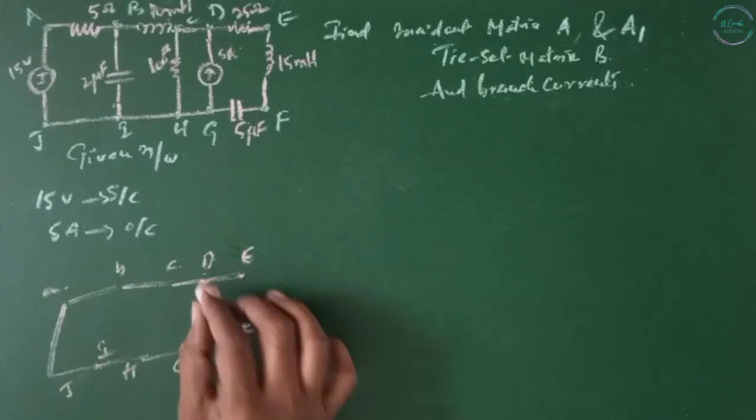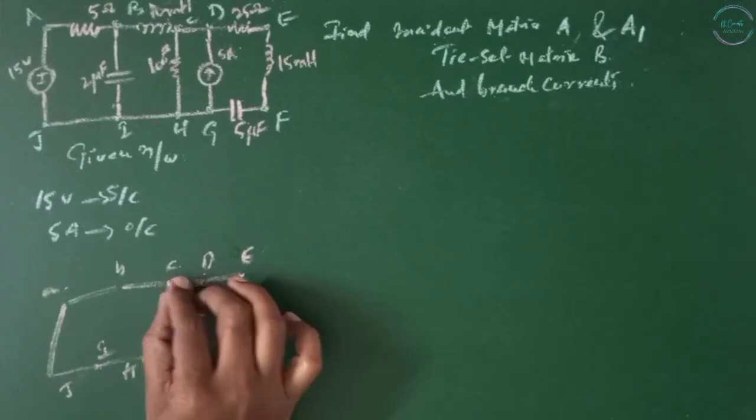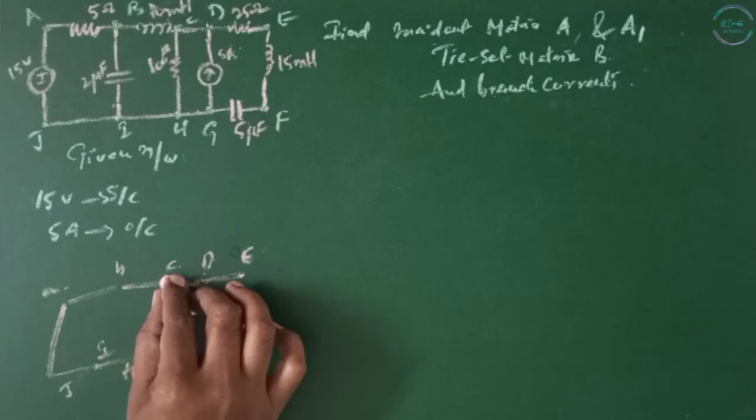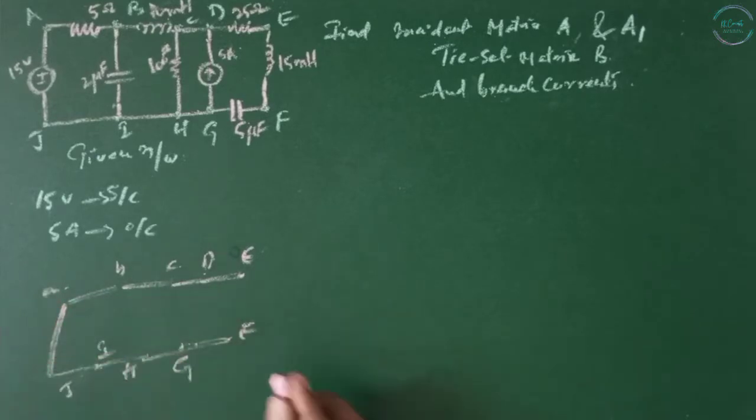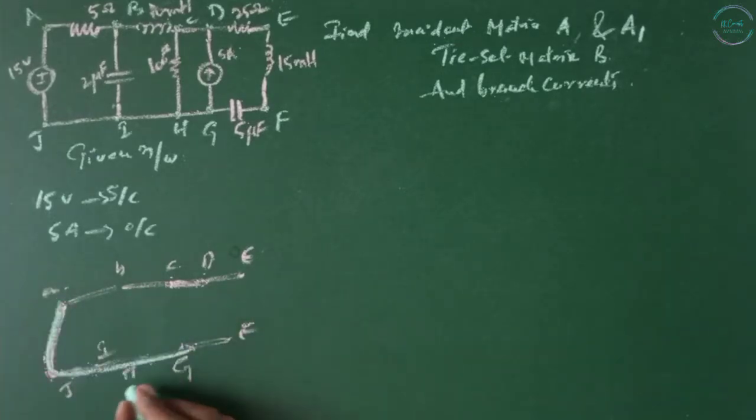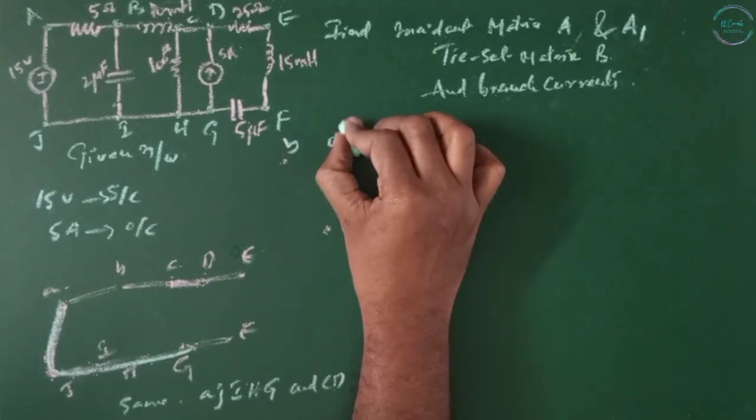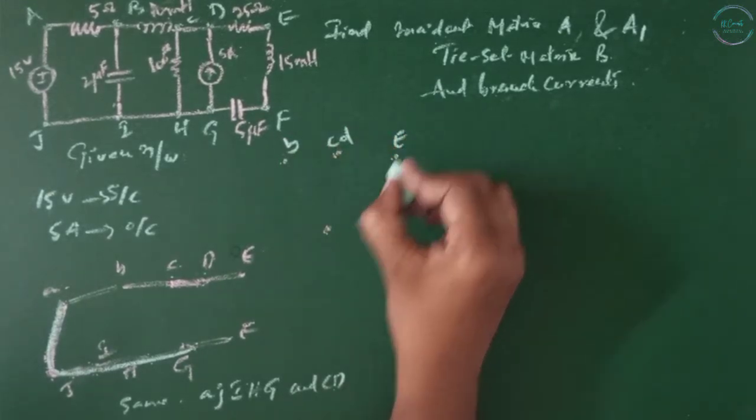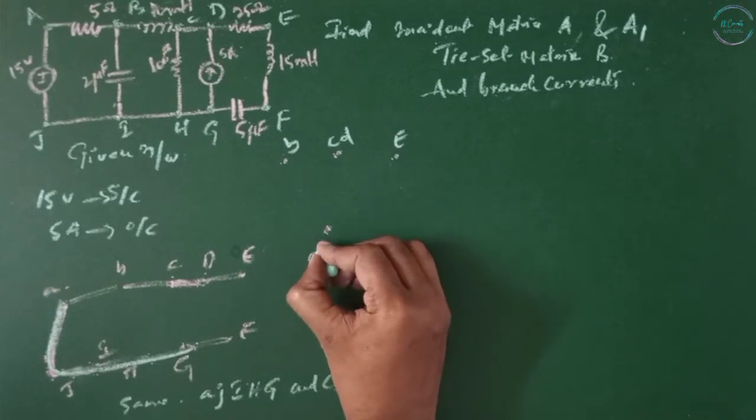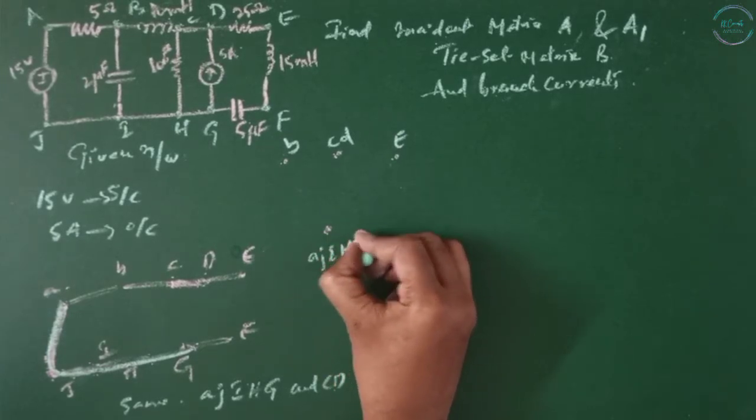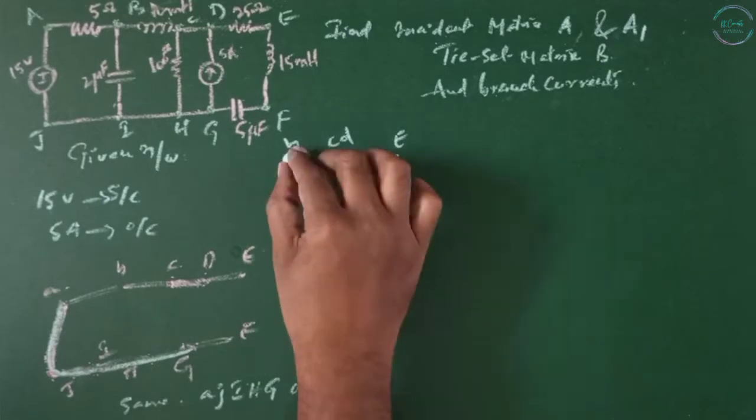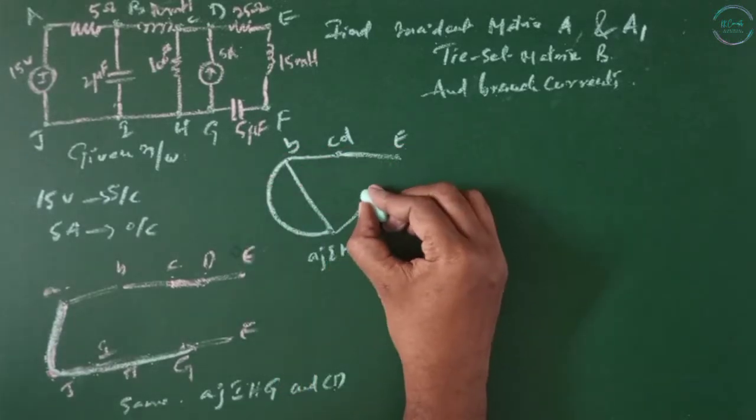After open-circuiting, these two terminals are at same potential. After short-circuiting this, all these are at same potential. B, this is C, D and this is E and this is A, J, I, H, G. And we have F here.